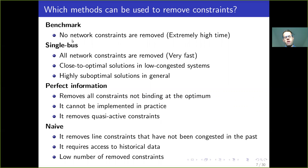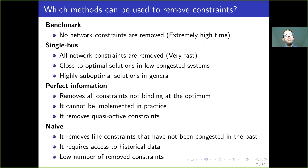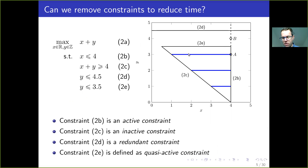The first method is a benchmark in which no network constraints are removed — the computational time is very high. The second is the single-bus method in which all constraints are removed: it's very fast and provides a solution close to optimal if the network is not very congested, but in general solutions are highly suboptimal. The third is the perfect information approach, which removes only the constraints that are active at the optimal. You can't do this in reality, but it serves as a benchmark — and as shown in the example, it would remove a constraint that's not active at the optimal.